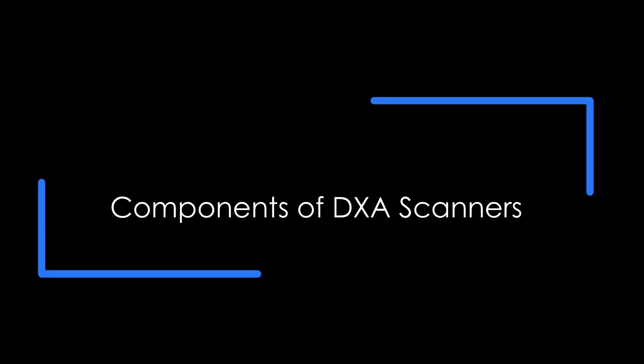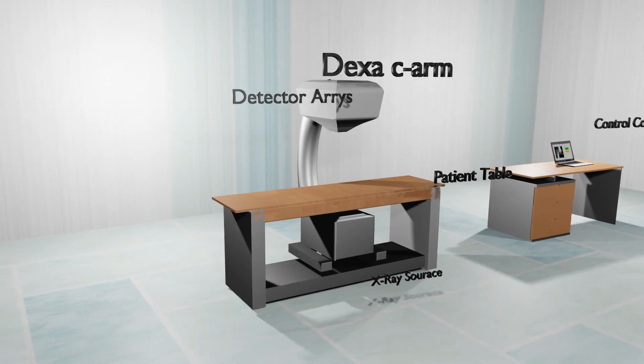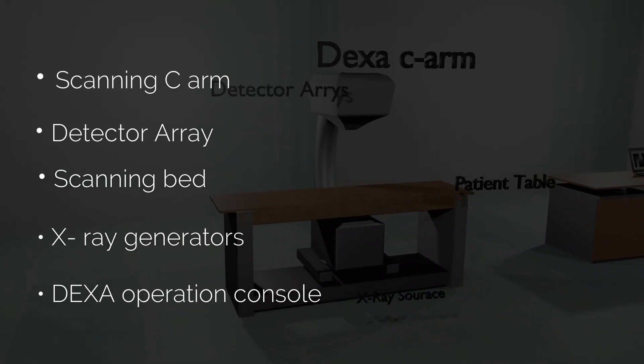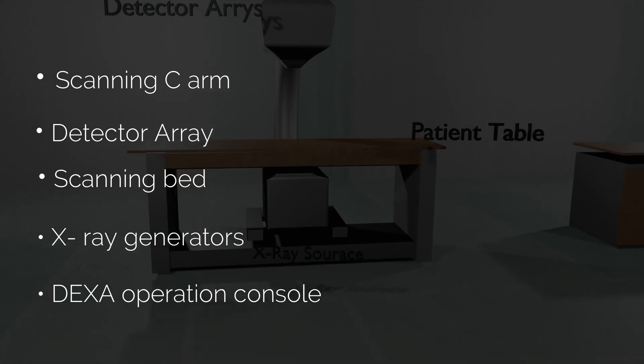Let's look into the components of a DXA scanner. The major components of a DXA scanner: a scanning C-arm, detector array, scanning bed, X-ray generators, DXA operation console.